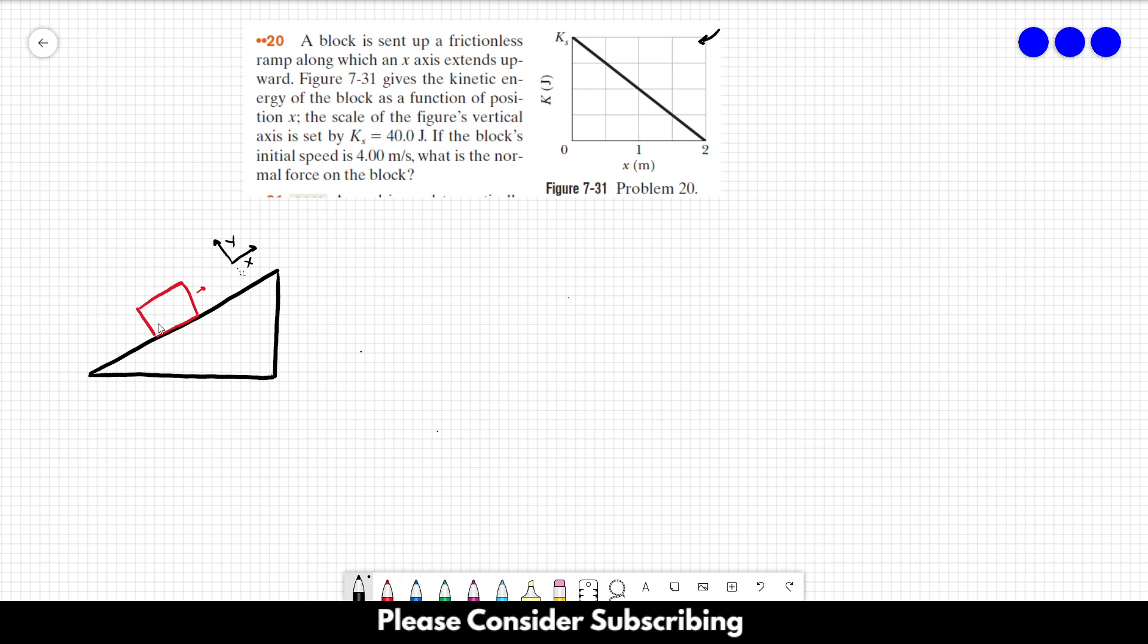You could choose it to point to this direction but it would give the same answer. Okay, so let's draw the forces that are acting on the block. There are only two different forces. We have the gravitational force over here, and we also have the normal force over here, which is exactly what we want to find out.